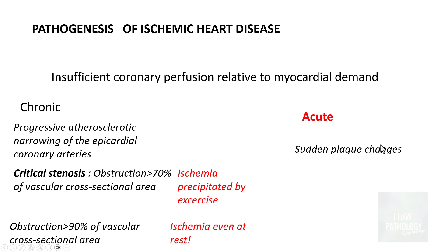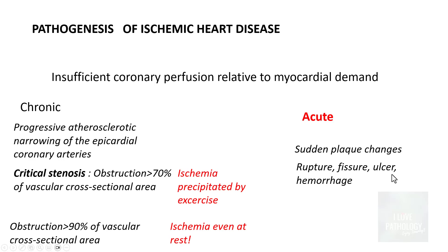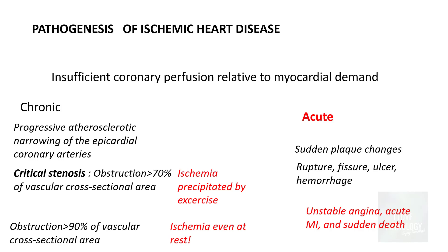Apart from chronic causes, there are acute causes that result in ischemic heart disease. When a plaque is already present, sudden changes can occur such as rupture of the plaque, fissure, ulceration, or hemorrhage within the plaque. All these can lead to unstable angina or sudden obstruction and occlusion of the coronary blood vessels.